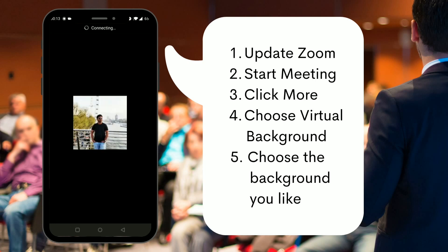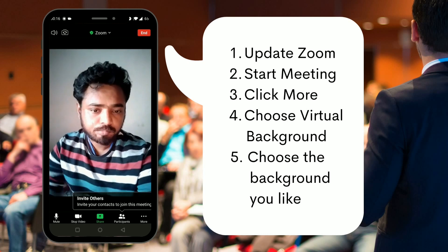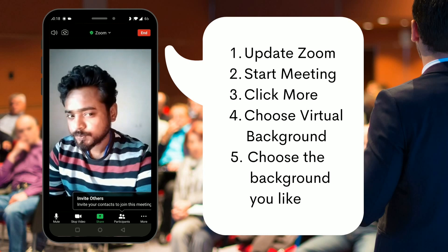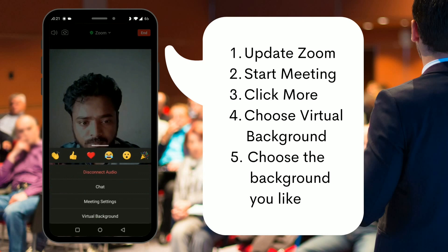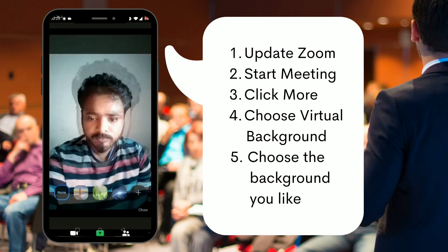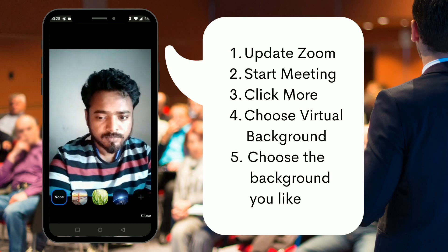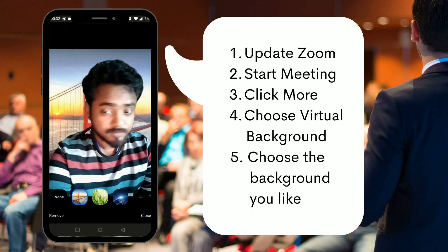So I'm going to turn on the virtual background option. To do that, click on the More option at the bottom right — the three dots — and choose Virtual Background, which is the last one. If you click that, you will see five different options.